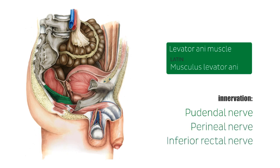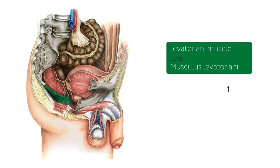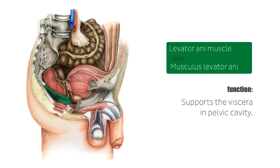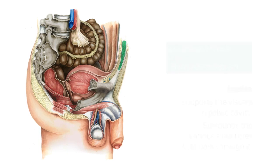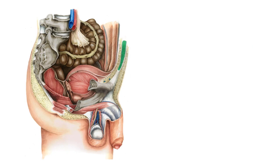In terms of function, the levator ani supports the viscera in the pelvic cavity — as you can clearly see, this muscle serves as a support system for the organs found above it — and it also surrounds the various structures that pass through it. We're now highlighting this muscle to briefly discuss it and understand what is happening here on this parasagittal section of the male pelvis.